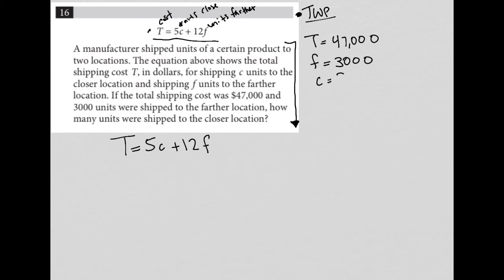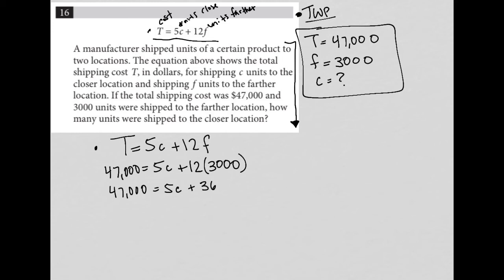I'm going to just use this information to substitute these variables out of the equation that I have written down here. So instead of T, I'm going to have 47,000. I still have 5C. And instead of F, I'm going to have 3,000. So let's simplify this equation. I have 47,000 equals 5C plus 12 times 3,000. So 12 times 3 is 36. And therefore, 12 times 3,000 would be 36,000.